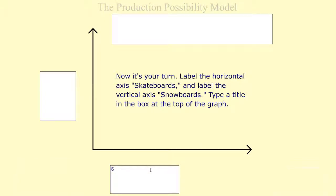Now, let's label the horizontal axis Skateboards and label the vertical axis Snowboards. Then, we will need to come up with a title at the top of the graph.